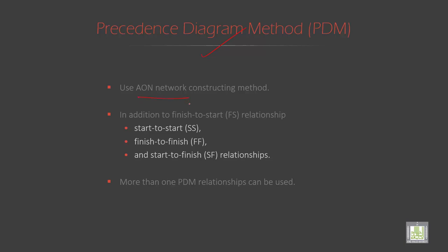AON network, you know it is activity on node. Then we use SS start-to-start, FF finish-to-finish, and SF start-to-finish. In addition we have one more PDM. This is what we have in the remaining slides, just have a look.